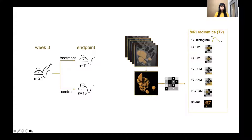We scanned the mice weekly for five weeks using T2-weighted MRI. We manually segmented the tumors and we extracted radiomic features in Syngovia Frontier, and we used lasso statistics to investigate differences between the two groups. We hope you will come and talk to us about our project and poster later today.